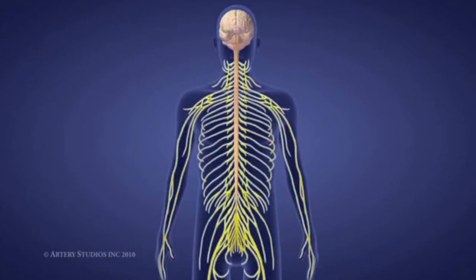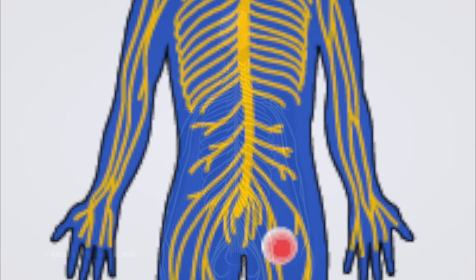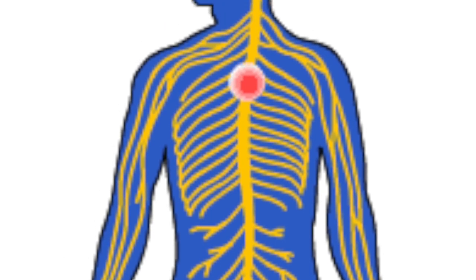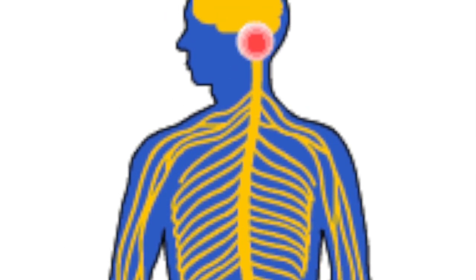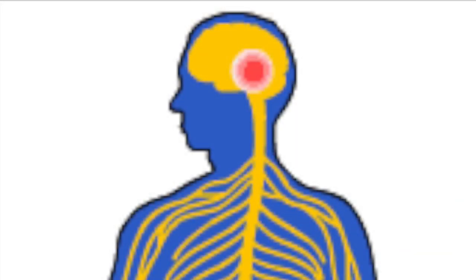This network of nerves carries messages back and forth between the brain and the rest of the body through the spinal cord. When the message is received by the brain, it tells the body how to react.